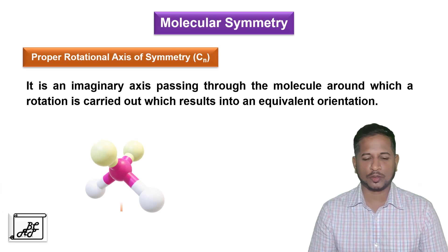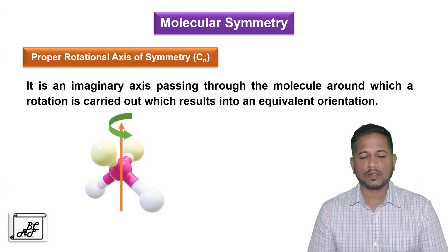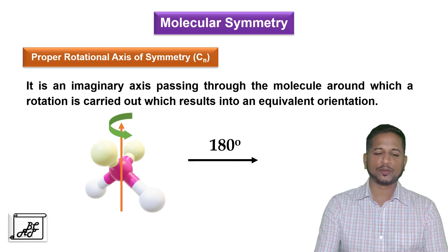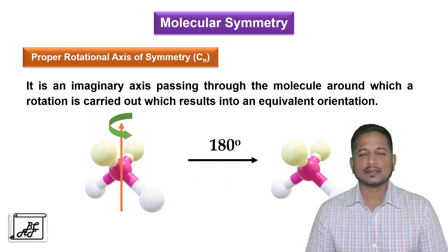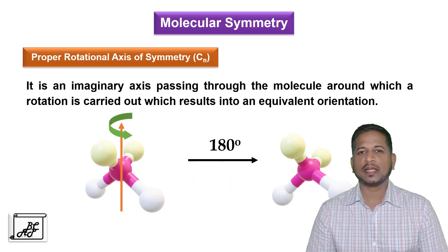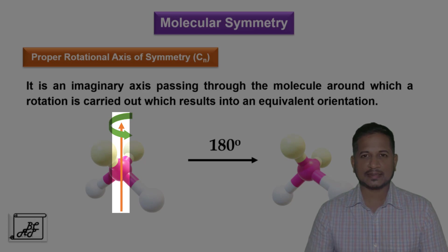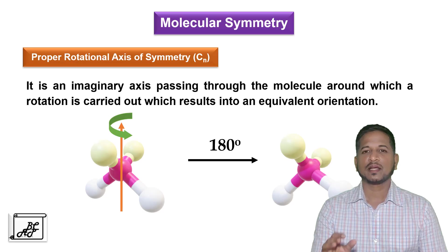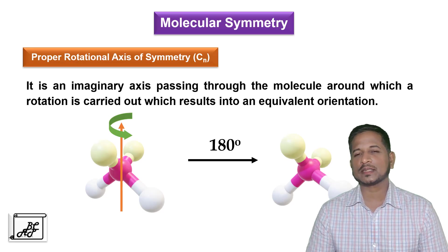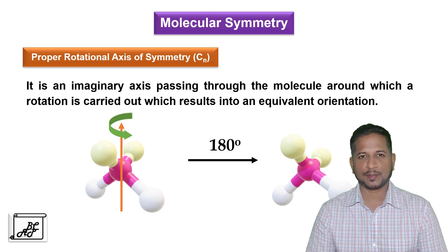As you can see on the screen, this dichloromethane molecule, if we rotate it around this axis, results in an equivalent image. So this axis around which the molecule is rotated is called the proper rotational axis of symmetry.